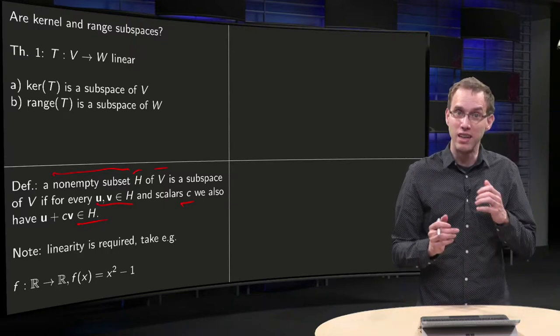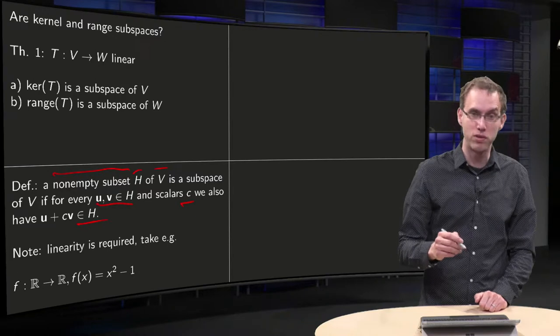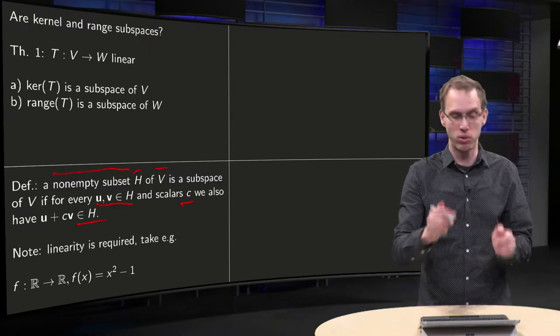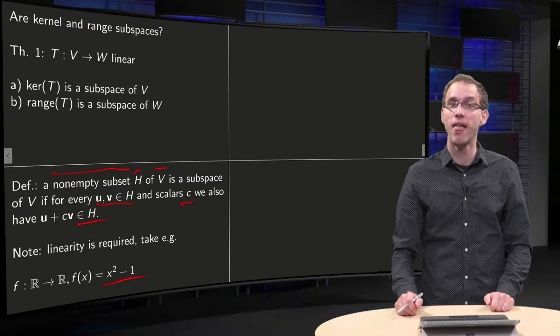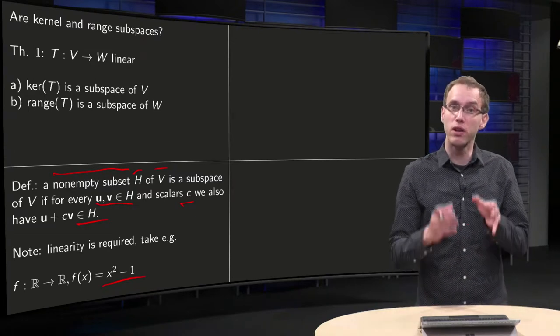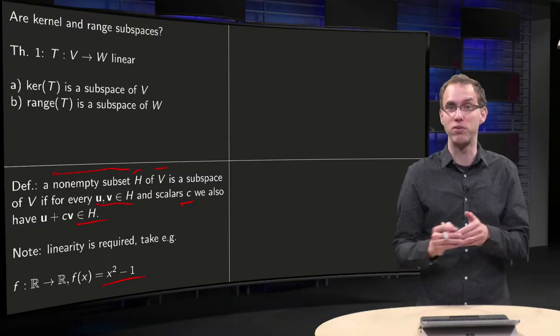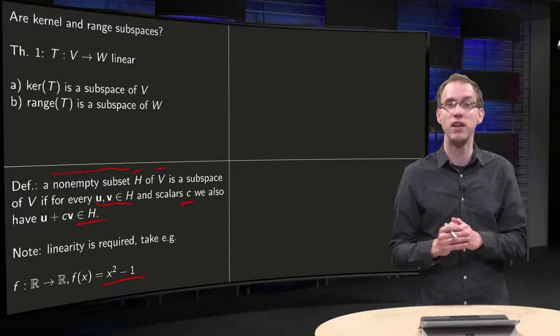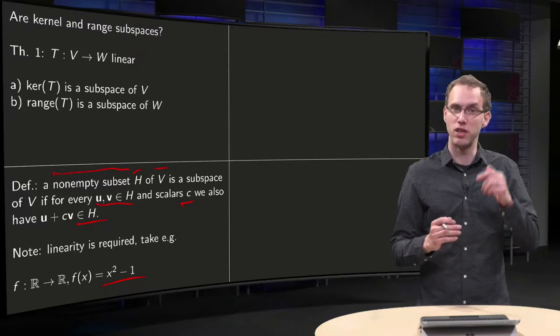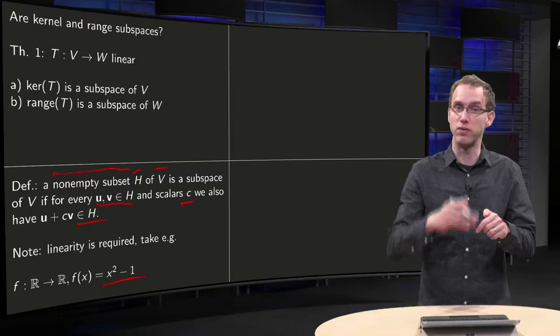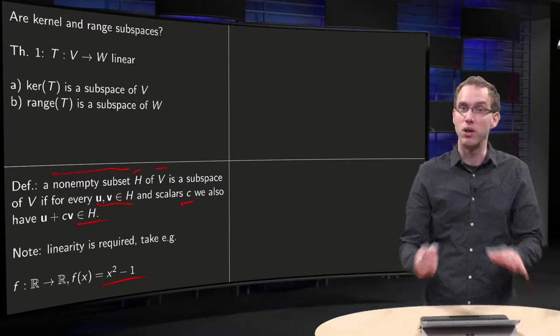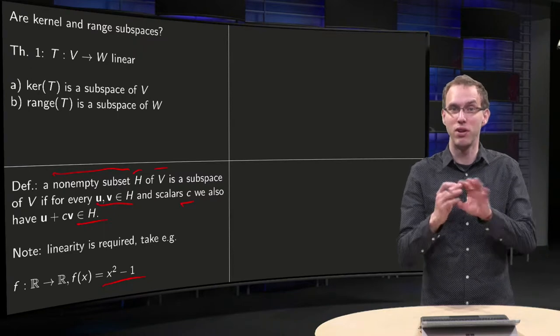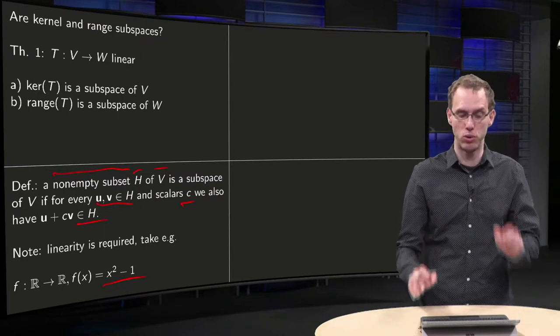Notice that linearity is required. If you take for example the transformation from R to R of f(x) equals x squared minus 1, which was shown in an earlier video, then the kernel just consists of the points minus 1 and 1. That's not a subspace, and the range was the set of numbers from minus 1 to infinity, and that's also not a subspace of R. So you really need linearity. If you don't have linearity, then this is in general not true.